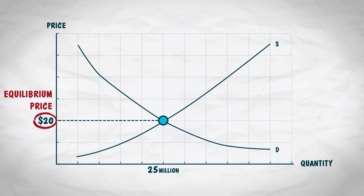We're now going to use a similar exercise to show how the equilibrium quantity is the only stable quantity, and this will help us understand how a free market maximizes the gains from trade.